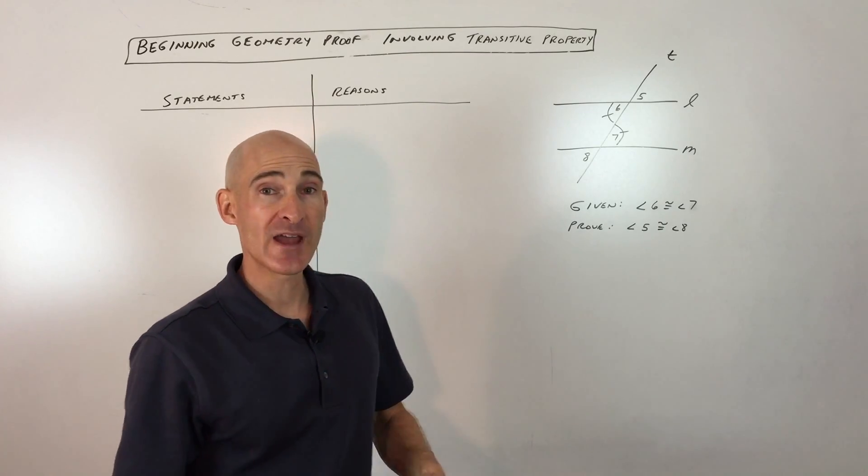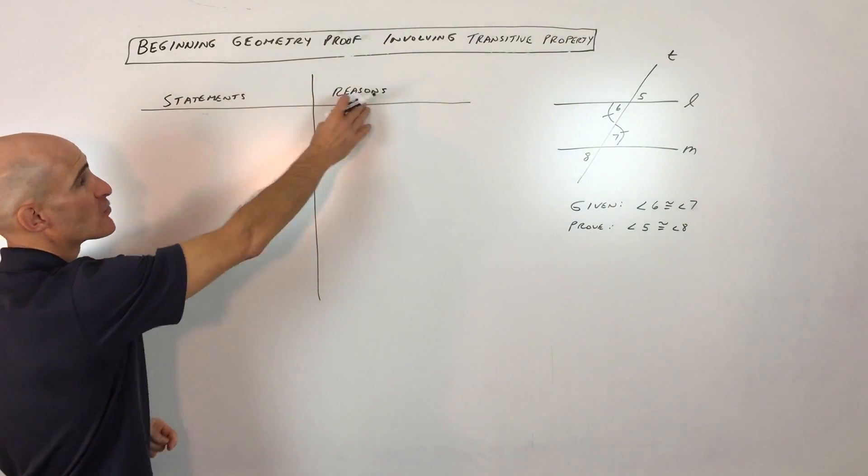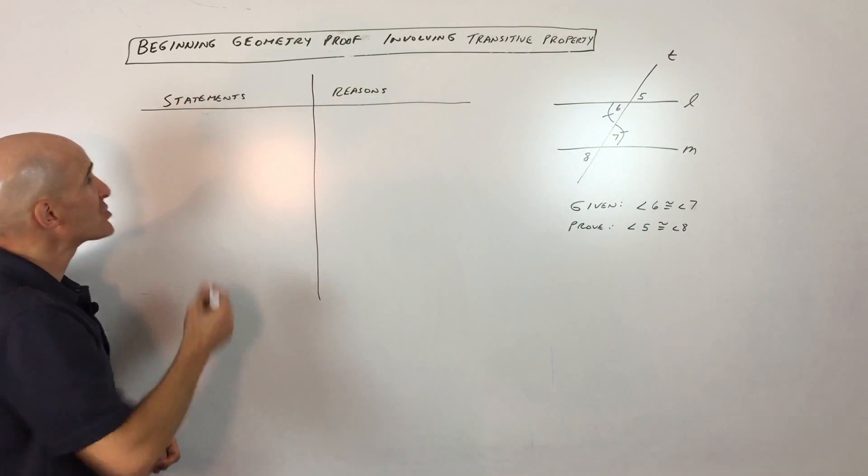So I think we have a good framework now. So then I would go over here to the two columns, look at the statements and reasons, and hash it out.